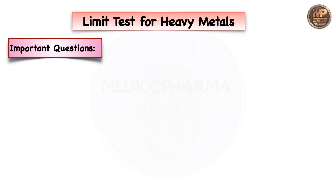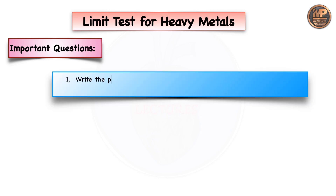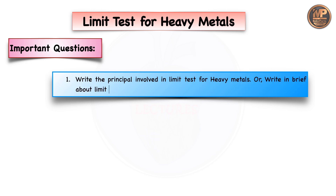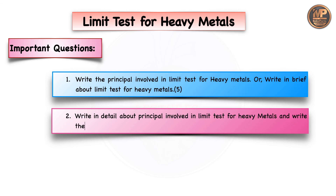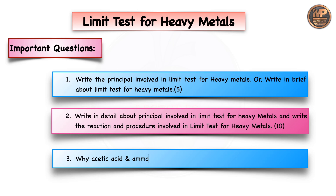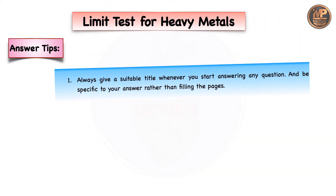Important exam questions include: write the principle involved in the limit test for heavy metals; write in brief or in detail about the limit test for heavy metals with reactions and procedure; and short questions such as why acetic acid and ammonia is used in the limit test for heavy metals.